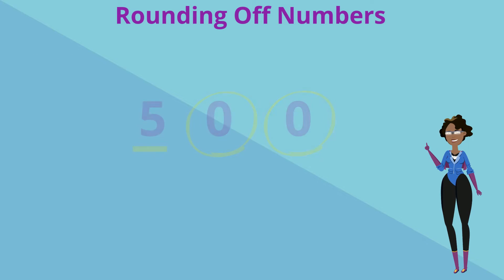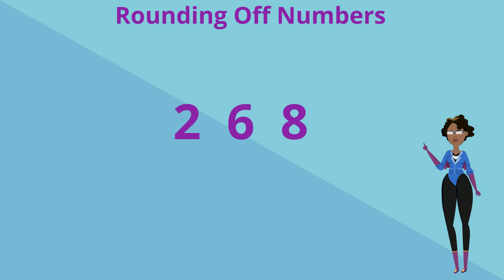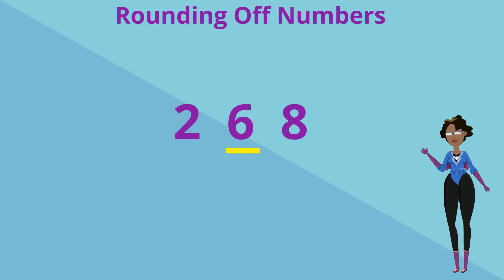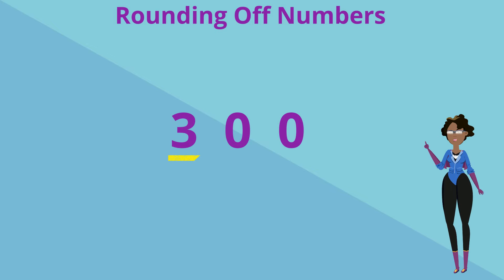But if the tens digit is 5 or more — meaning 5, 6, 7, 8, or 9 — then we add 1 to the hundreds digit and write zeros to replace the tens and the ones digit.